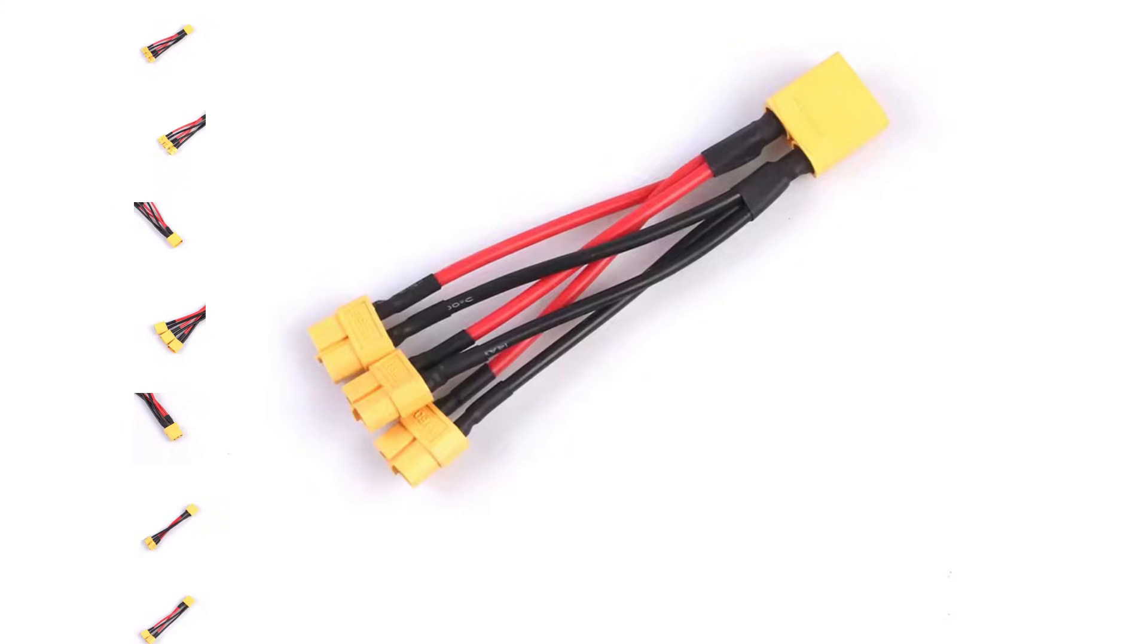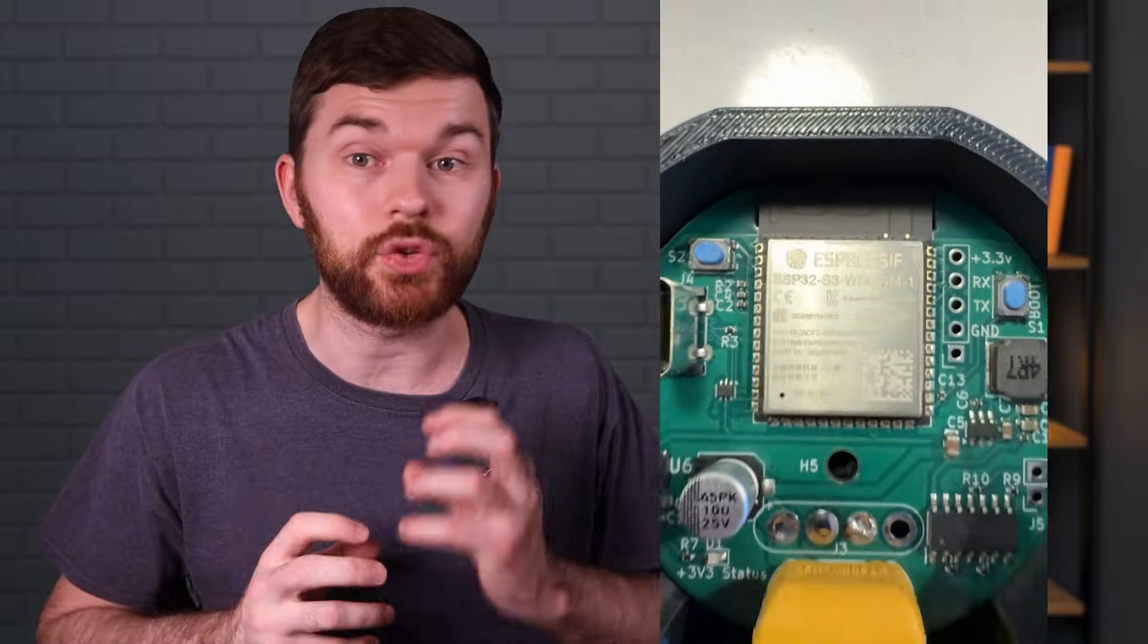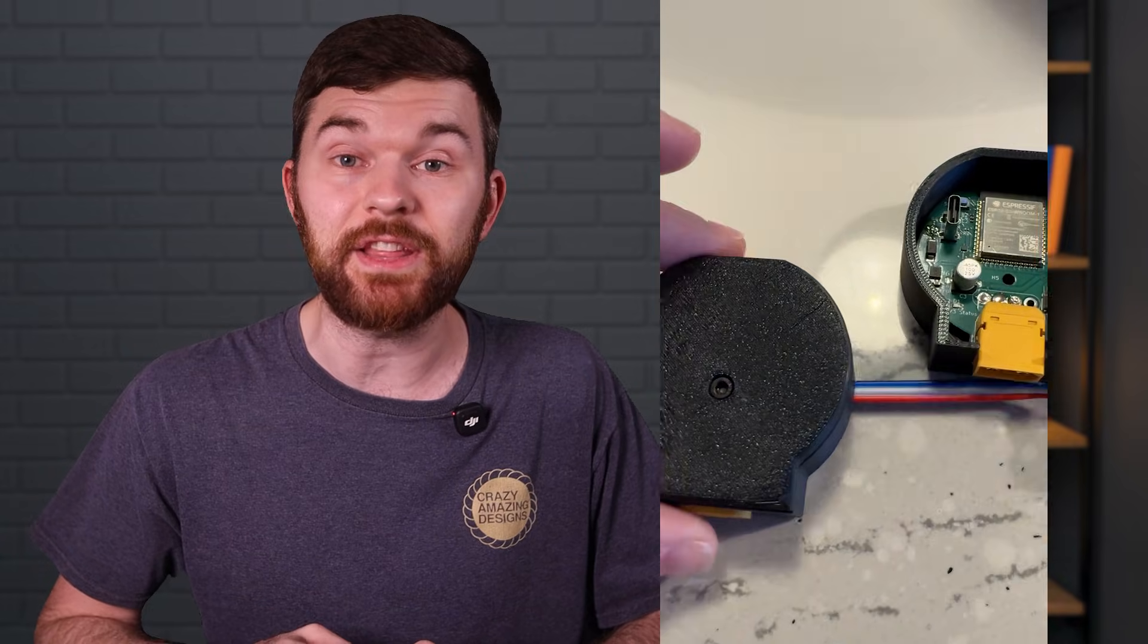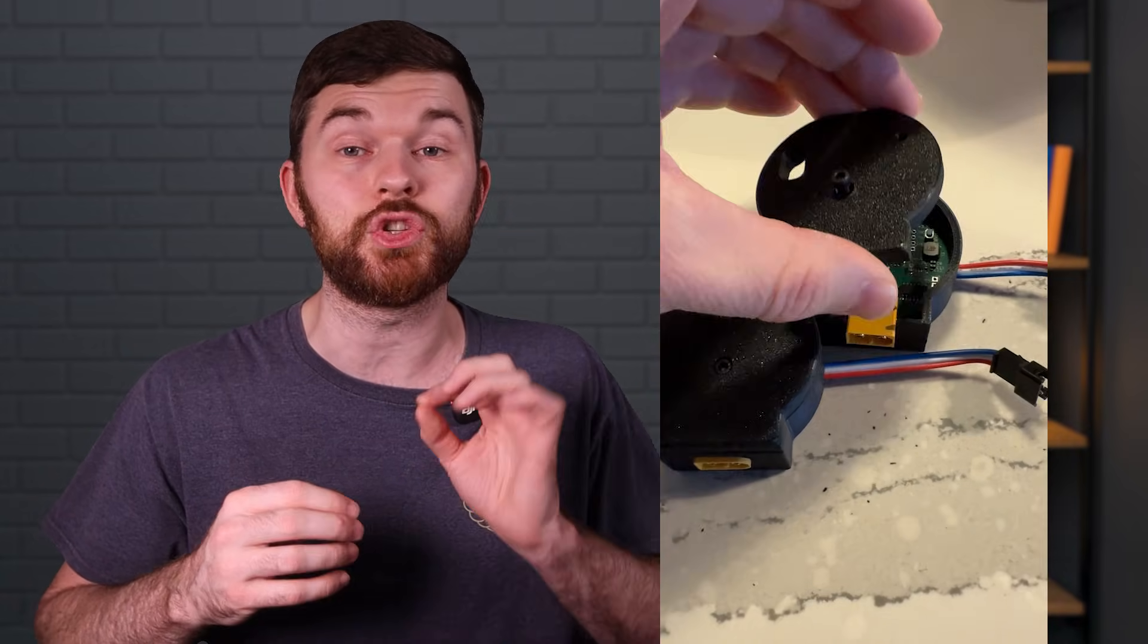These 1-2 or 1-3 XT60 adapters are great for letting you connect the power supply to each of the tree's injection points. Now, let's connect the controller PCB to Wi-Fi. These ESP32 boards can only connect to 2.5 GHz Wi-Fi networks.